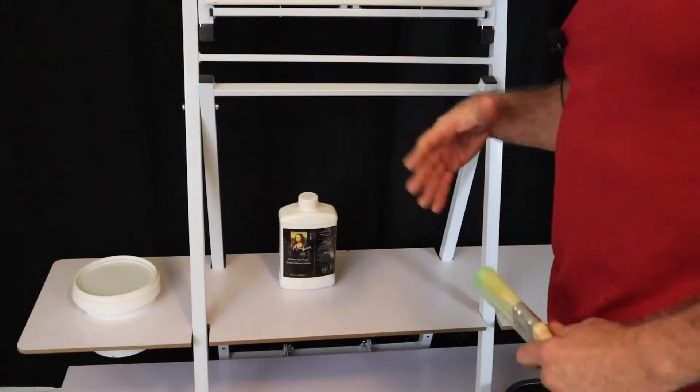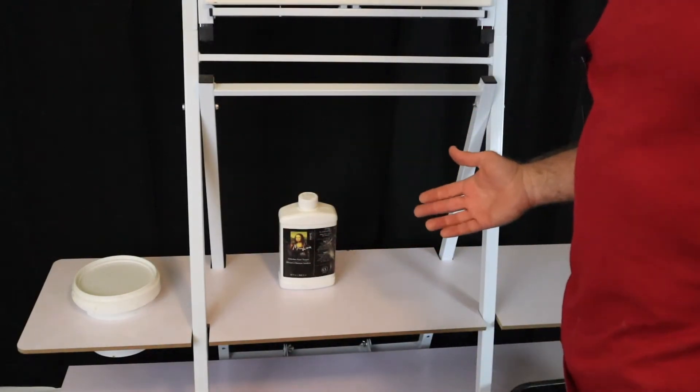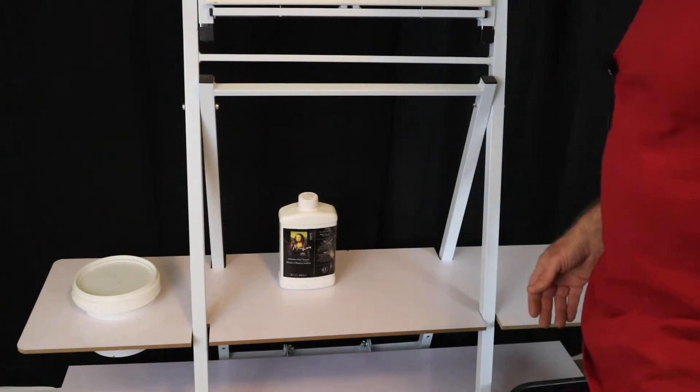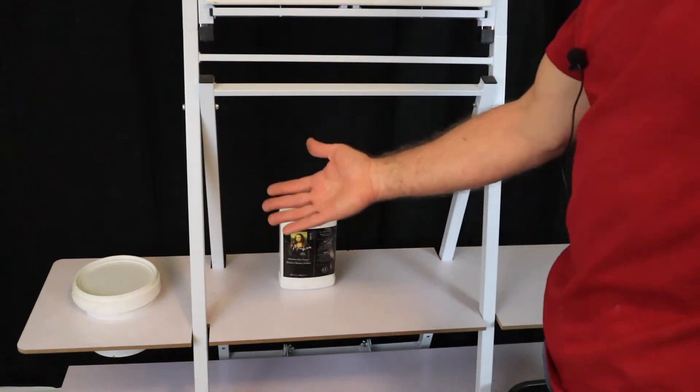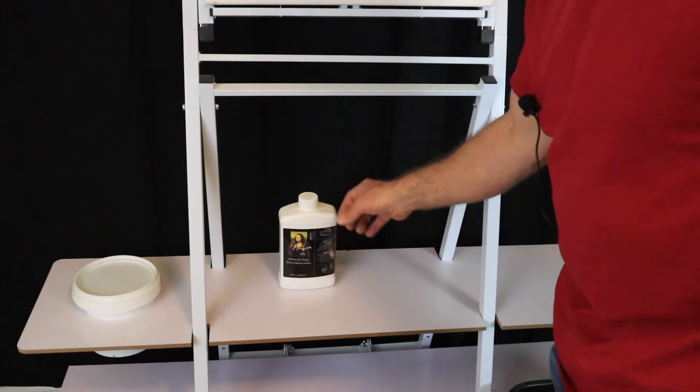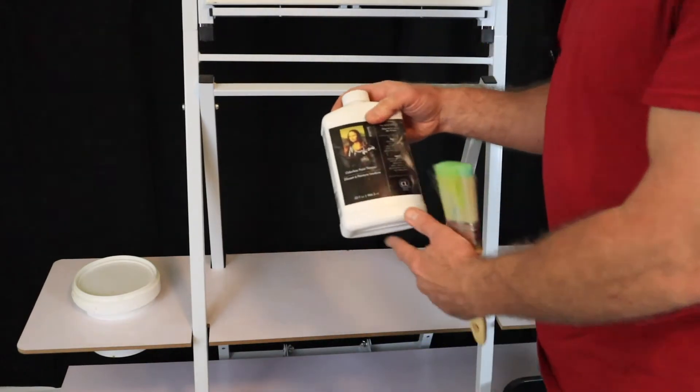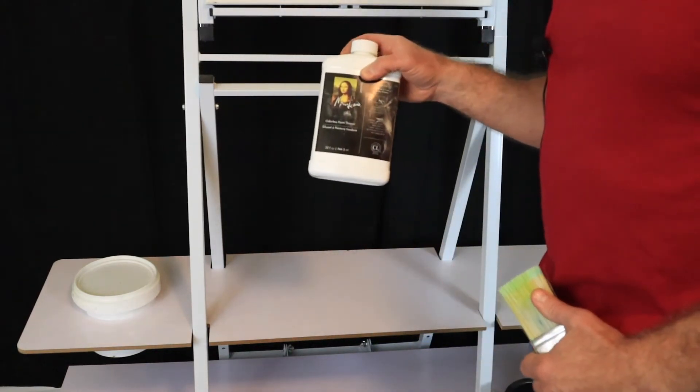We're going to talk about after we're done painting and the cleanup. What do we use? Well, we're going to be using the same thing we're using while we're painting and that is odorless paint thinner or odorless mineral spirits.